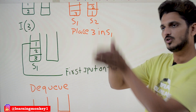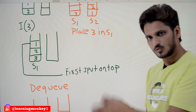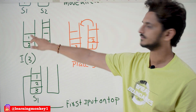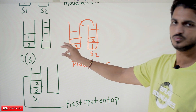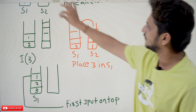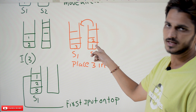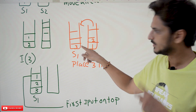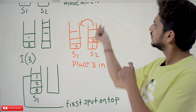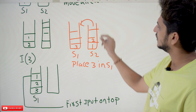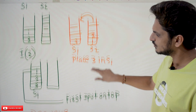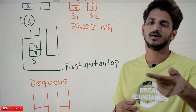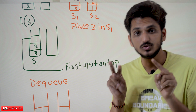This is the enqueue operation: move all elements from S1 onto S2, push the new element onto S1, then move all elements from S2 to S1. If you want to insert 3, and the stack currently has 2 and 1, move all elements to S2 — pop 1 and place in S2, pop 2 and place in S2. Now place the new element 3 onto S1. Again move all elements from S2 onto S1 — pop 2 and place it, pop 1 and place it. S1 now looks like 3, 2, 1 with 1 on top. The first inserted element is on the top — that is the enqueue operation using two stacks.